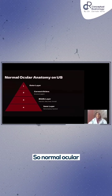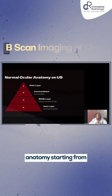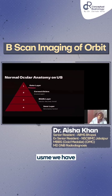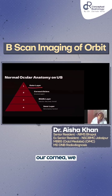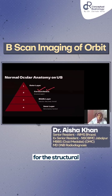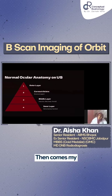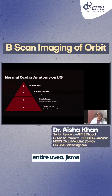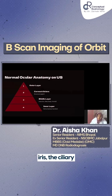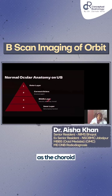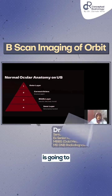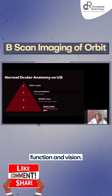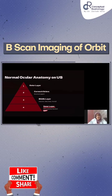Starting with normal ocular anatomy layer by layer. The outer layer consists of the cornea and the sclera for structural support. The middle layer is the entire uvea, which includes the iris, the ciliary body, and the choroid. The inner layer is very important for sensory function and vision.